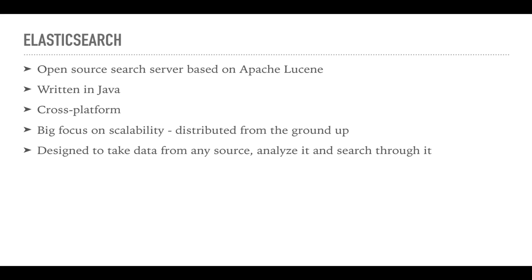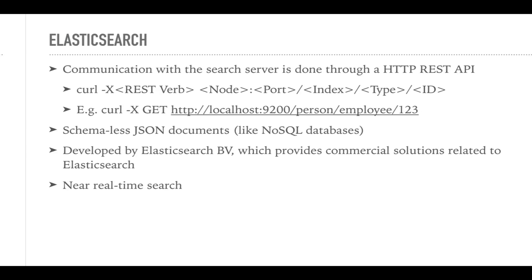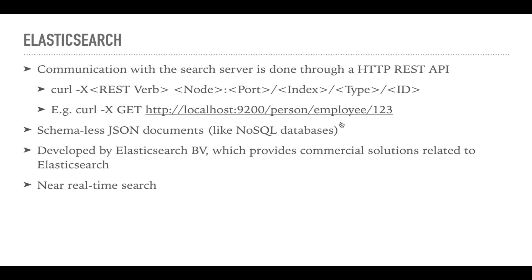Elasticsearch was designed to be scalable from the beginning, which means that it has a distributed architecture. It's designed to take data from any source and make it searchable. Communication with Elasticsearch is done through an HTTP REST API.